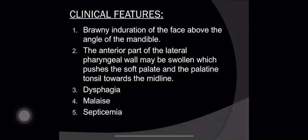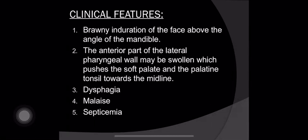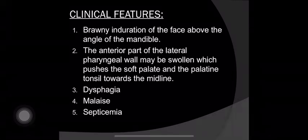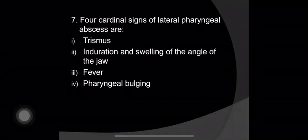How will this infection present itself? It will be in the form of brawny induration of the face above the angle of mandible — brawny induration being a pathological hardening and thickening due to inflammation. The anterior part of the lateral pharyngeal wall may be swollen, pushing the soft palate and palatine tonsil towards the midline. Other features include dysphagia (difficulty in swallowing), malaise, and septicemia. If there is a lateral pharyngeal abscess, four cardinal signs will be prominent: trismus (inability to open the mouth completely), induration and swelling of the angle of the jaw, fever, and pharyngeal bulging.